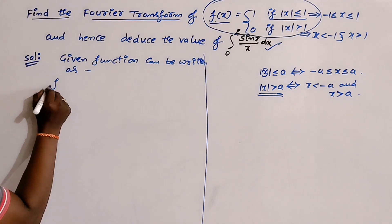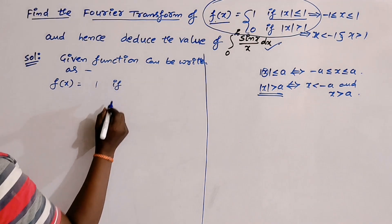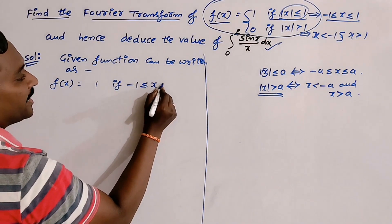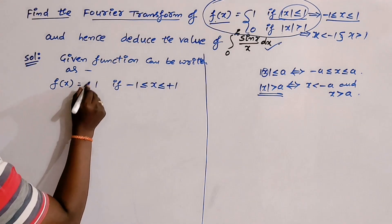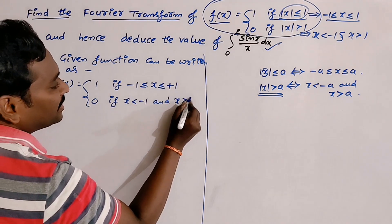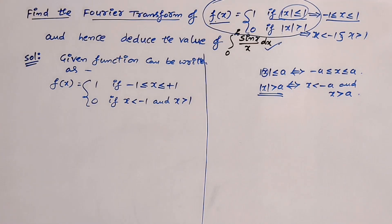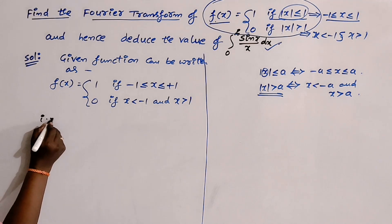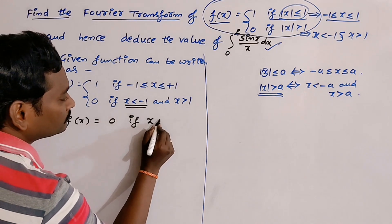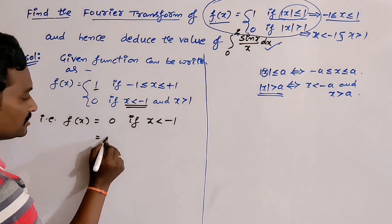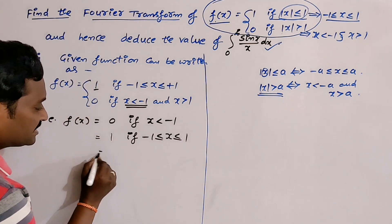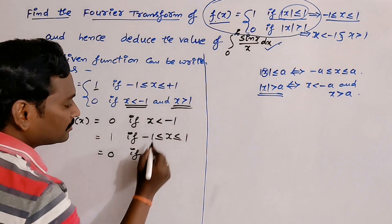The given function can be written as: f(x) = 1 if |x| ≤ 1, i.e., −1 ≤ x ≤ +1, and 0 if x < −1 or x > +1. Rewriting in order: f(x) = 0 if x < −1, then 1 if −1 ≤ x ≤ +1, and again 0 if x > 1.